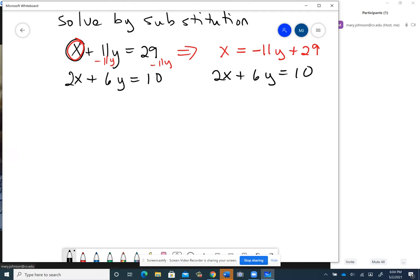All right, now if we're solving by substitution, here's the idea. This x and this x should be the same at the point of intersection. And x and negative 11y plus 29 are interchangeable. The equal sign tells you that. They have the same value. So what we're going to do is substitute negative 11y plus 29 in for the x.